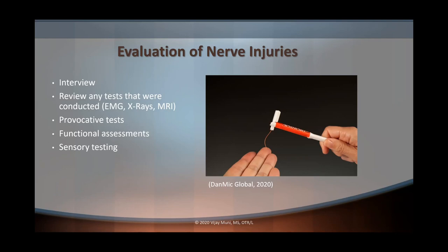You can also perform provocative tests to assess if the nerve is irritated, and any functional assessments such as the Jebsen Hand Function Test, or any test that can simulate ADLs and IADLs. We always want to see how a nerve injury can affect their daily activities. We can also do sensory testing to help assess the location of the sensation issue. We can use these results to plan for treatment and update our plan of care, and relay findings back to the physician.